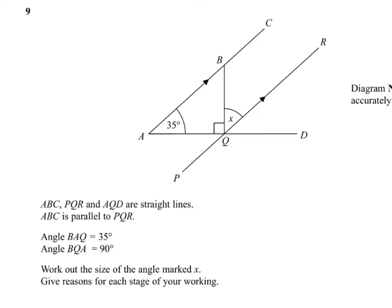In this question we've got a diagram with some parallel lines, the angle 35 degrees, and a right angle here, which means BQD is a right angle. We're asked to find the angle X, and all that information is given to you down here.